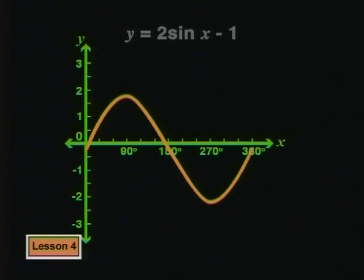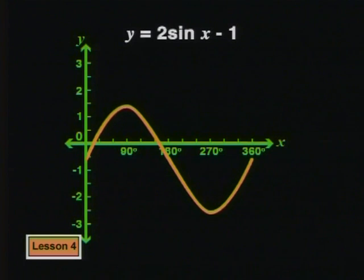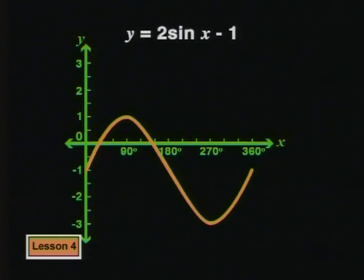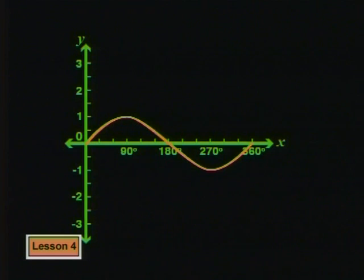The q value is negative 1, so the whole graph will be shifted down by 1 unit.